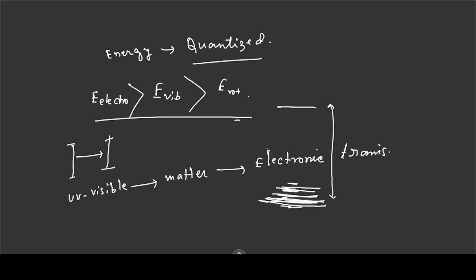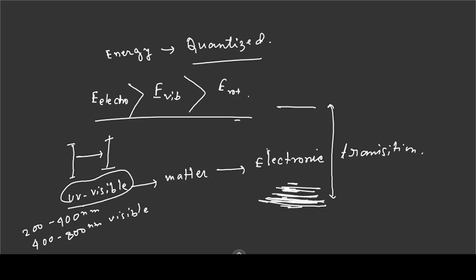UV-Visible light interacts with matter. UV-Visible means UV — this is the largest wavelength range. The colors of the visible spectrum are: violet, indigo, blue, green, yellow, orange, red — that is the color of UV-Visible. UV-Visible starts from violet.